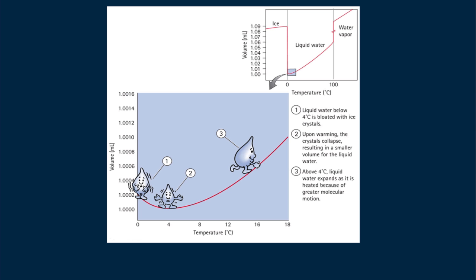This is summarized in this figure. Between 0 and 4 degrees Celsius, region 1, the volume of water decreases as temperature increases. Above 4 degrees Celsius, region 3, water behaves the way other substances do. Its volume increases as its temperature increases.